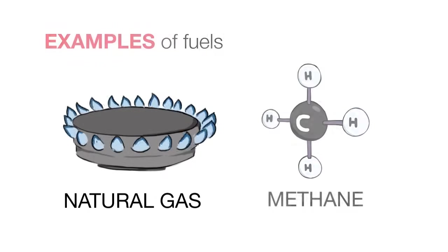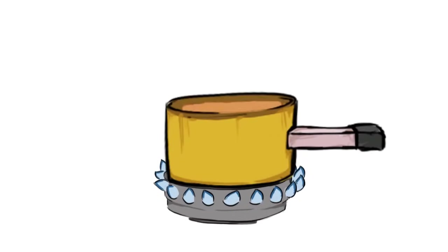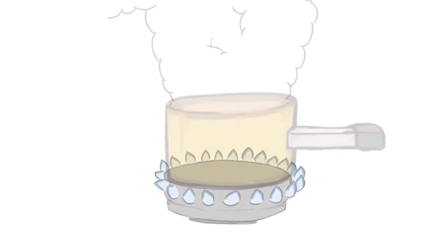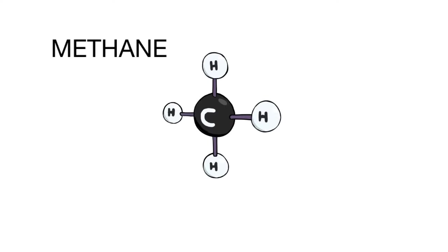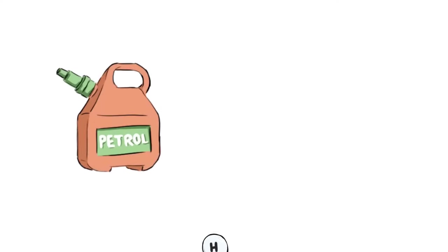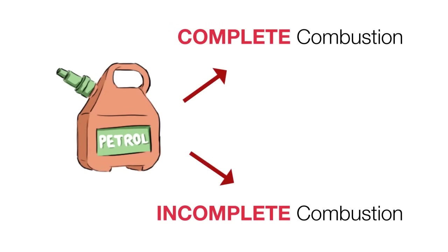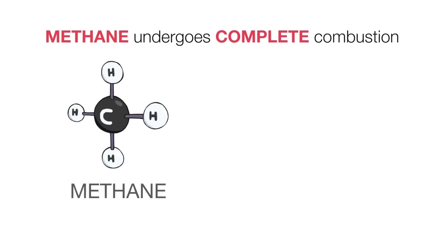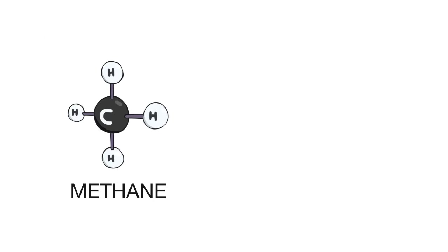This is the fuel we burn to heat up our food. Methane, like other hydrocarbon fuels such as petrol, can undergo either complete or incomplete combustion. When methane undergoes complete combustion, that is in a plentiful supply of air, it produces carbon dioxide and water.